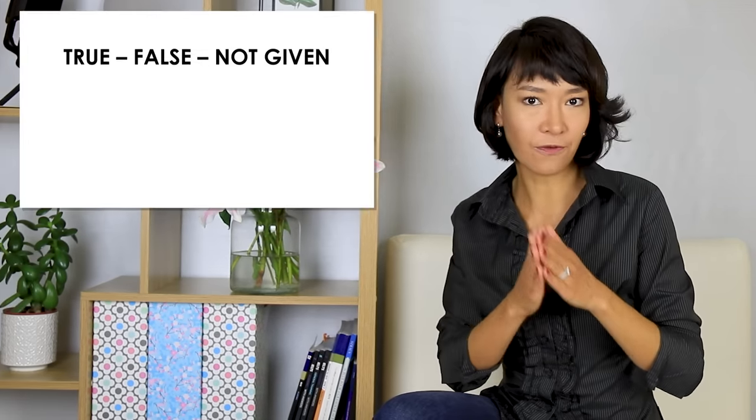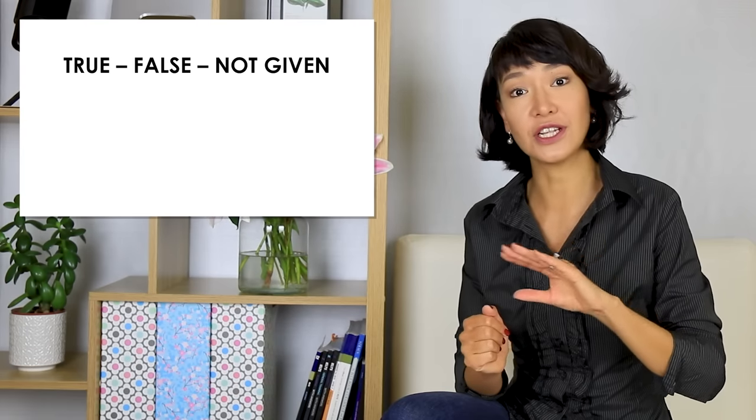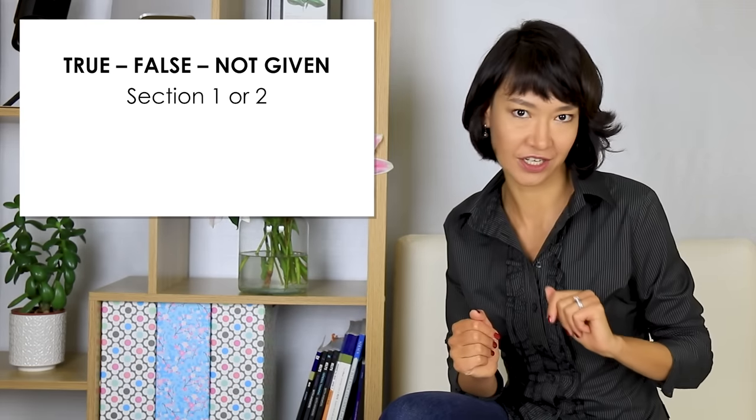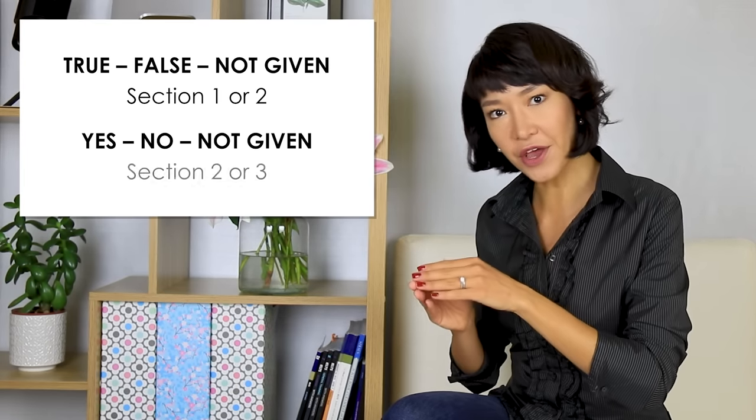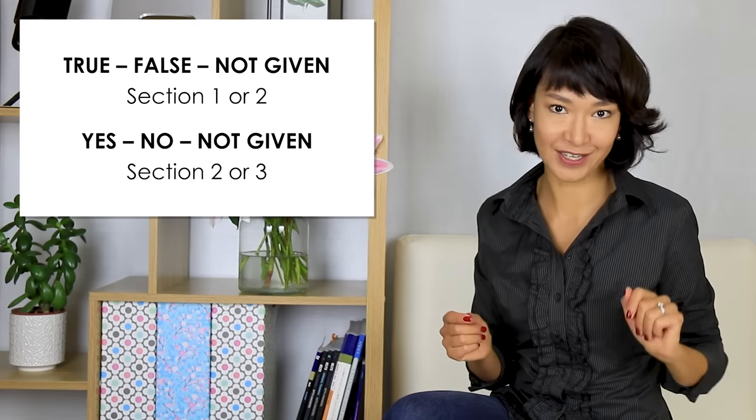Almost all IELTS tests have at least one set of true false not given or yes no not given questions. Sometimes you just have one set, but sometimes you have a set of these questions in each section of your test, so you have three sets. True false not given questions are usually in the first or second sections, and yes no not given is usually in the third or sometimes the second section.